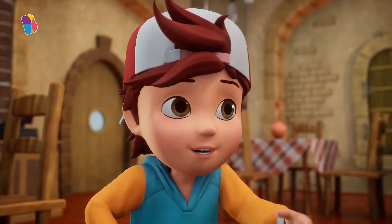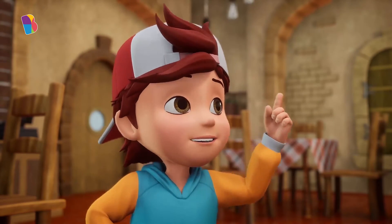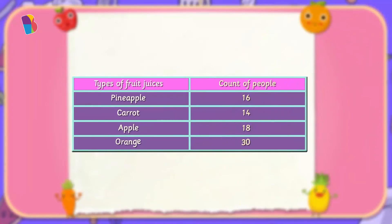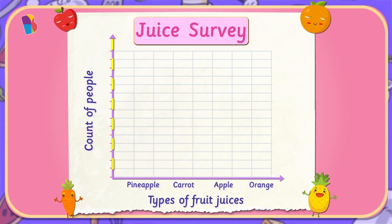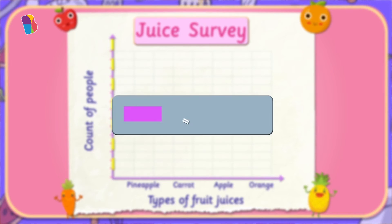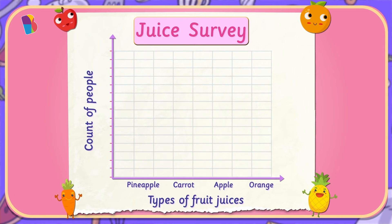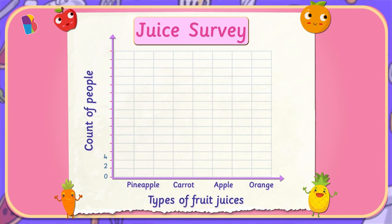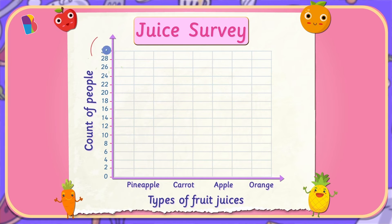A scale will help us reduce the height of the graph. That way, we can easily fit the bar of orange juice into our graph. Let's do it! In this graph, the vertical axis represents the count of people who like a particular juice. When we use a scale, each unit of the vertical axis will equal two counts of people. The numbers on the vertical axis will increase in twos. We start at zero and increase by two for each unit — so it will be zero, two, four, six, and so on till thirty.